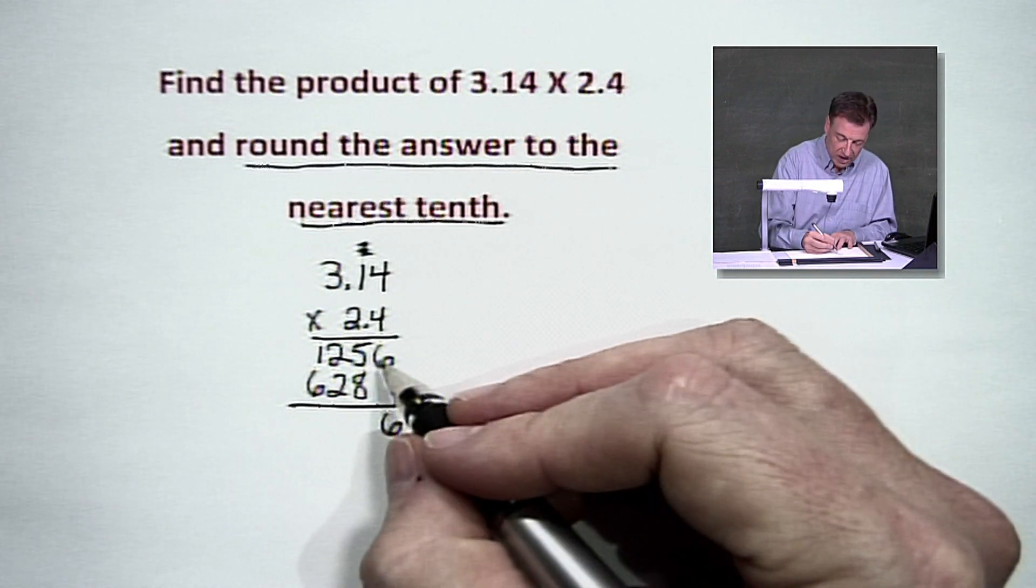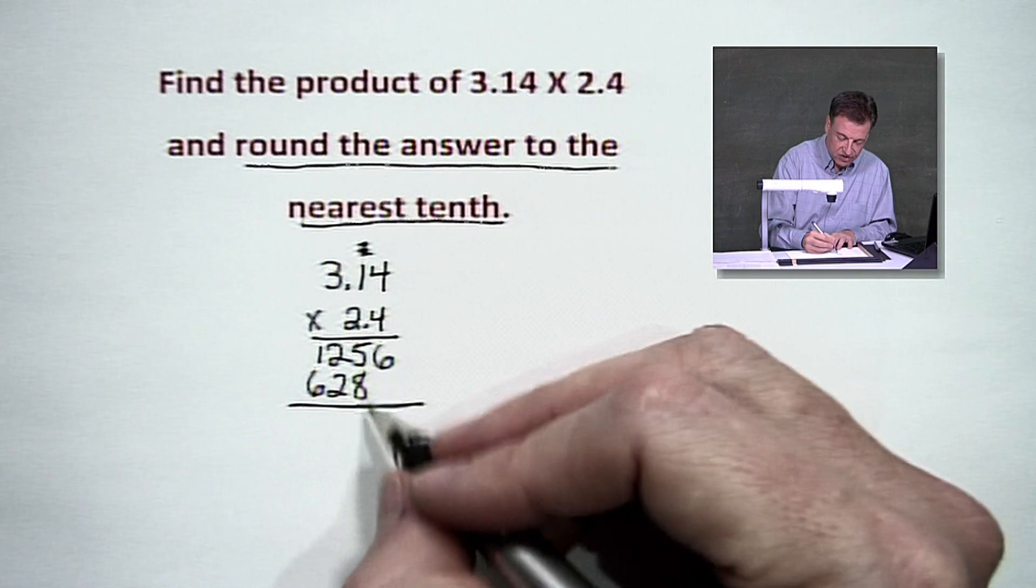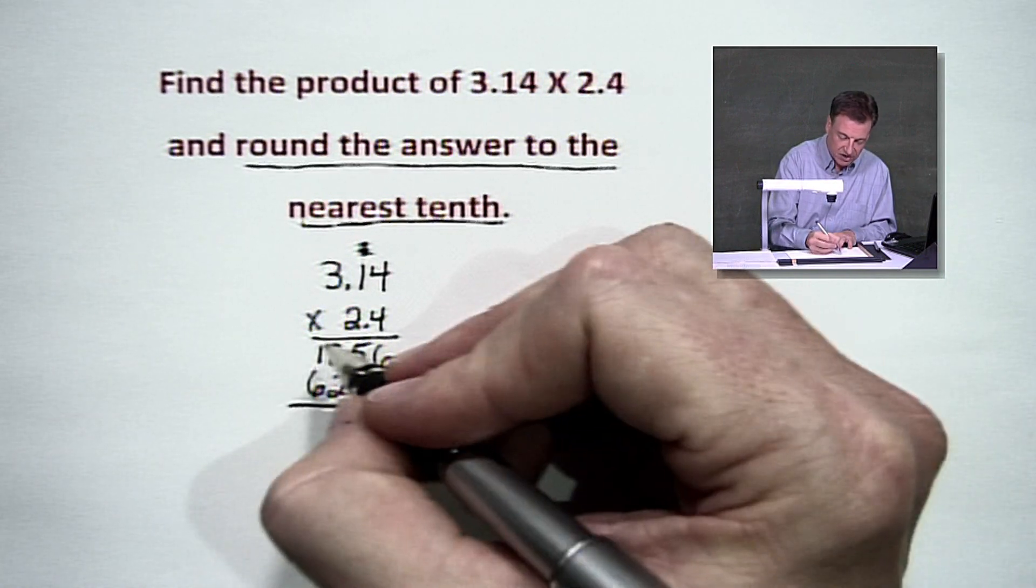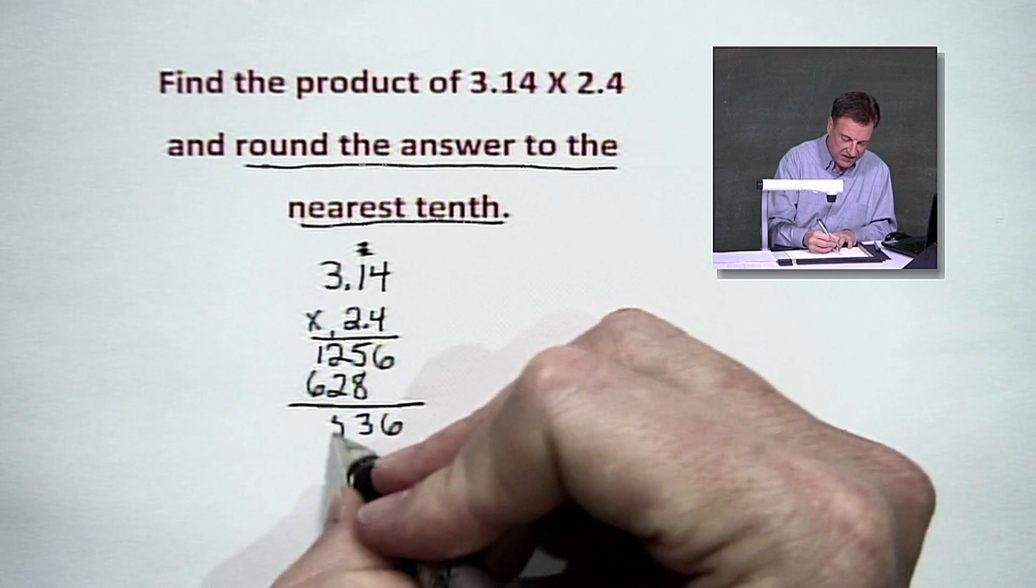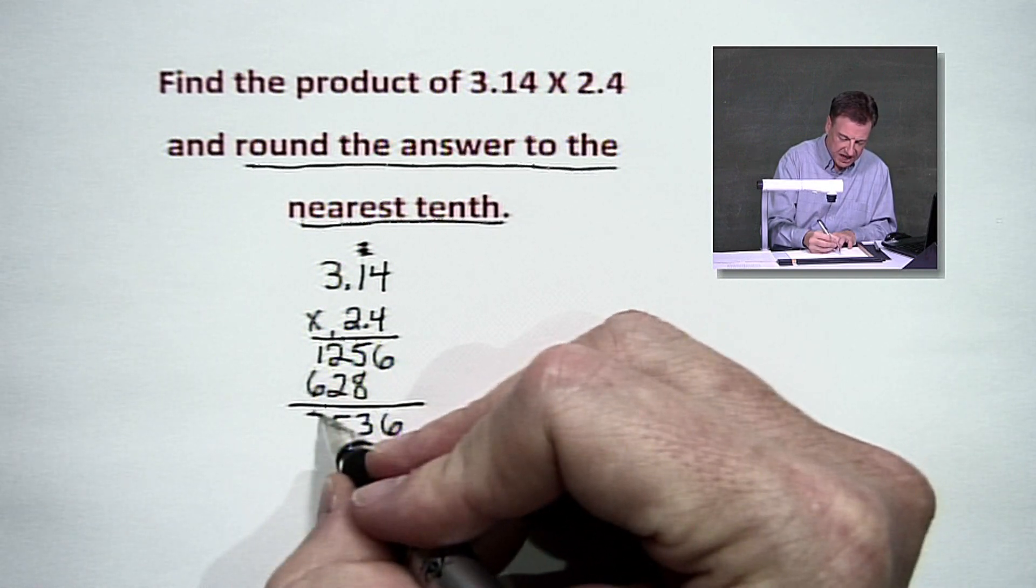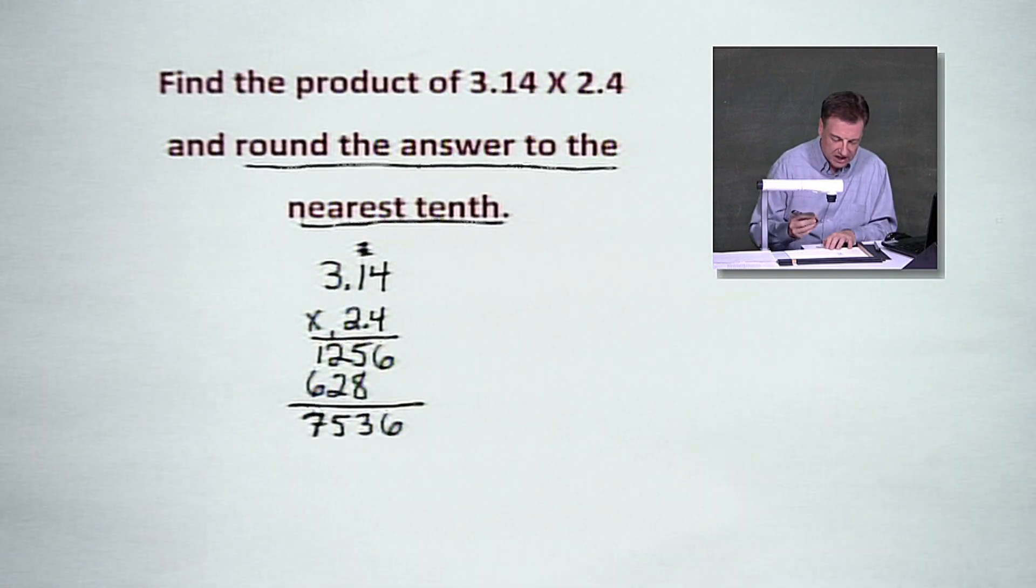We get a 6. We have 13, 5, and 8. Bring that 1 over. 1, 2, and 2 more gives us 5. And we've got this little 7 hanging on there.